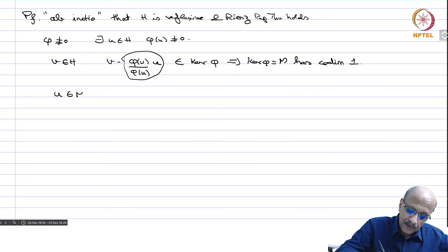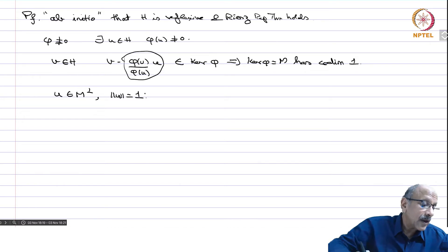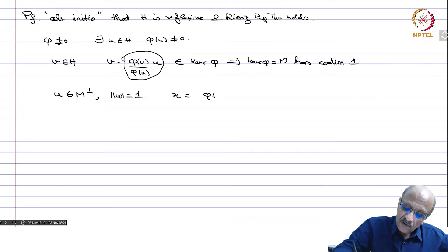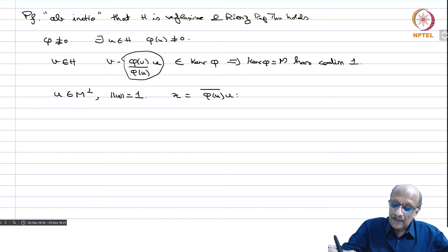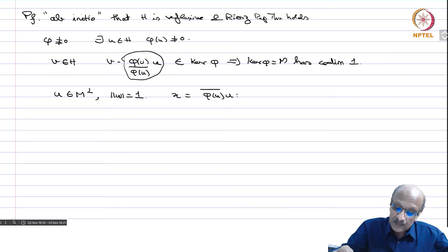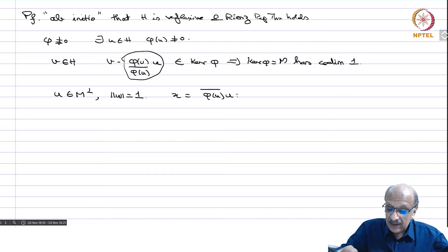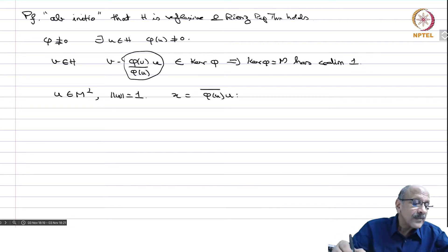Take u in M-perp, the orthogonal complement, such that norm u = 1. Put y = phi(u)-bar times u. We are always working with complex numbers as the base field in Hilbert space theory because there is conjugation that comes into play. The real case is obvious since you do not need to put the conjugate at all.